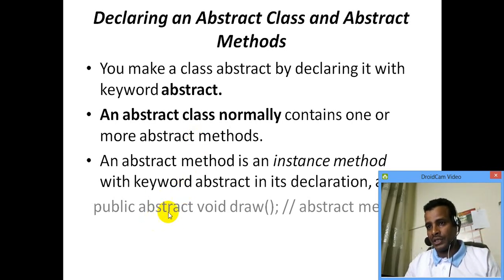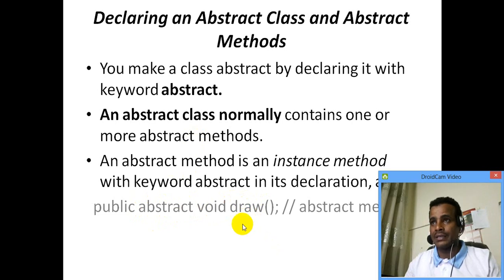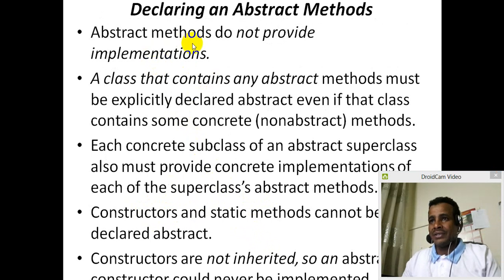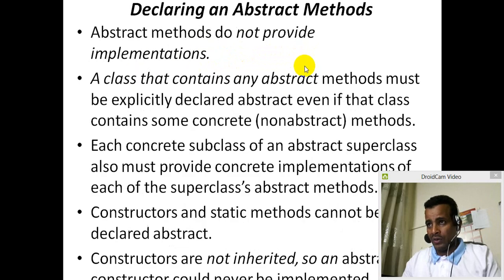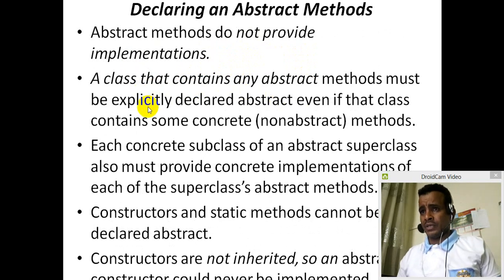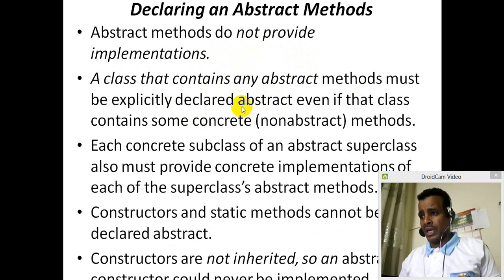The abstract method will be implemented. The definition will be implemented. The abstract method of implementation is simply — in order to be implemented, a class that contains an abstract method must be explicitly declared abstract. What is abstract?